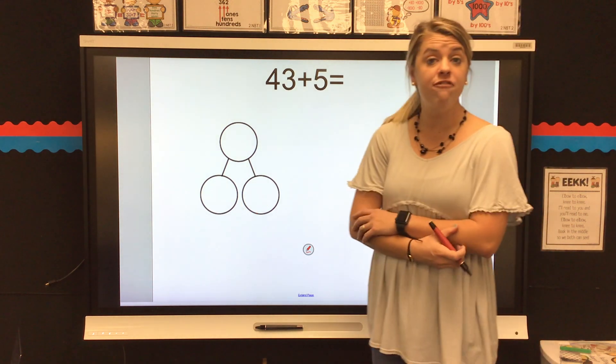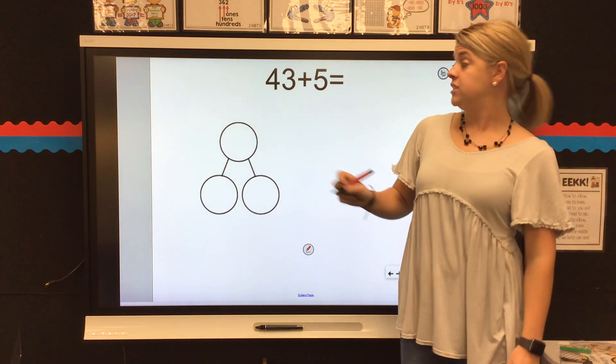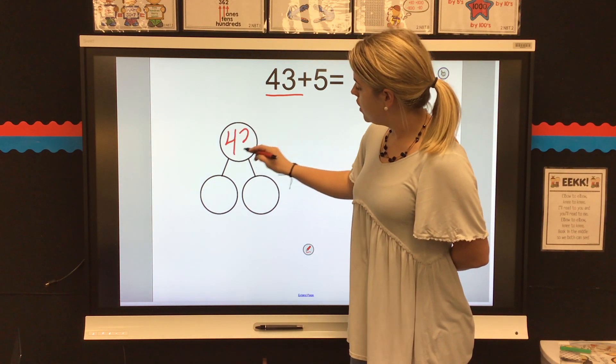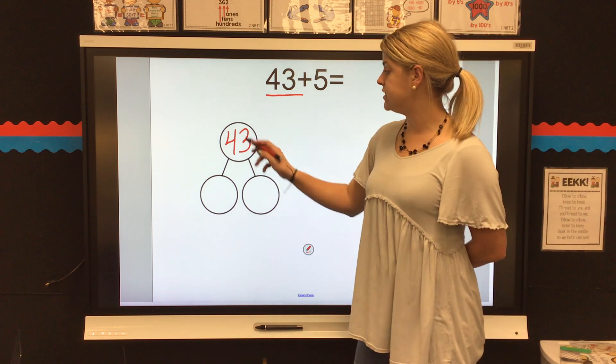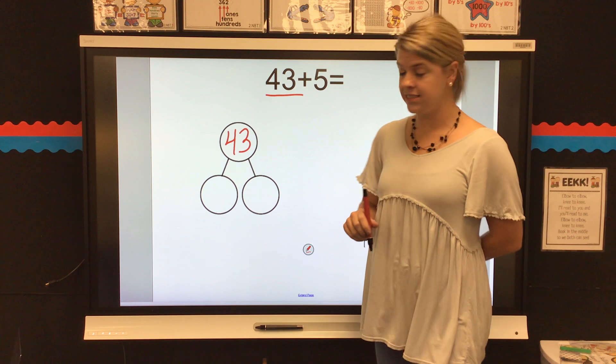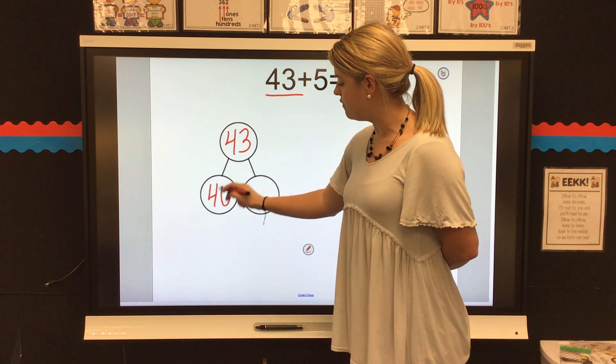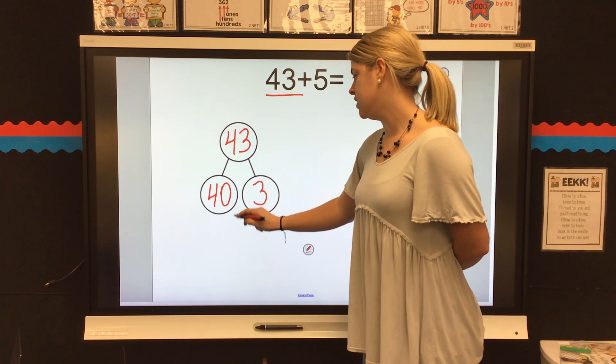All right, we have 43 plus 5. We are going to put our biggest number into our number bond, 43. And then we're going to decompose that number into tens and ones. Tens, there are four tens and three ones. So, I know that four tens is the same thing as 40, and three ones is three.